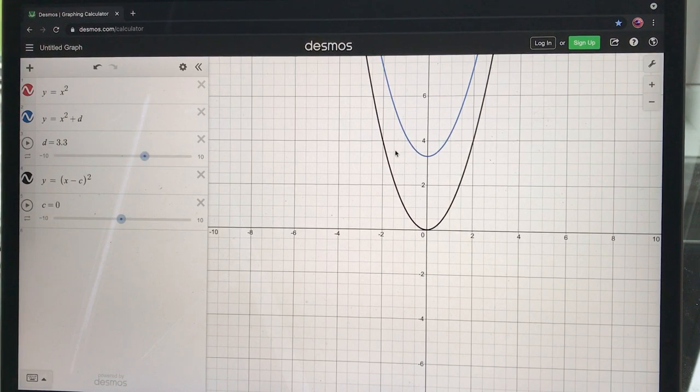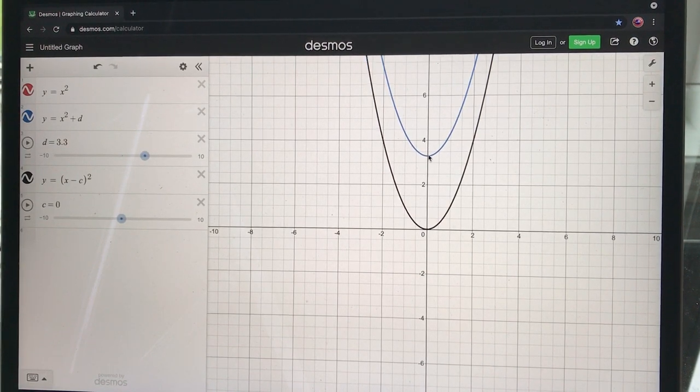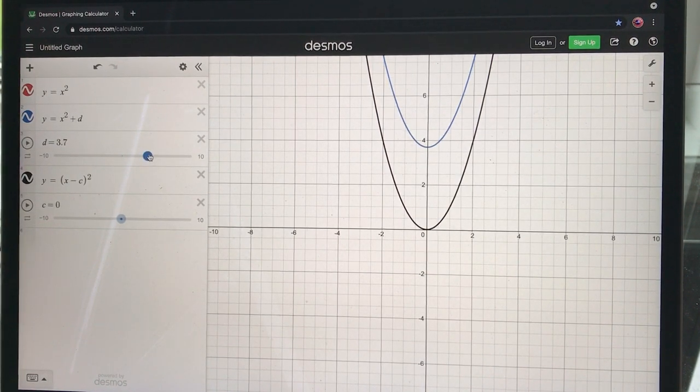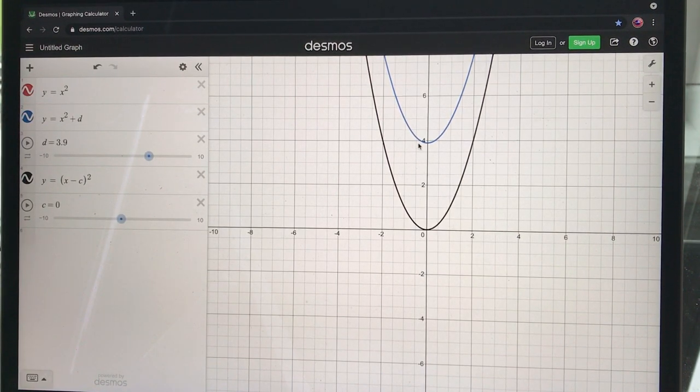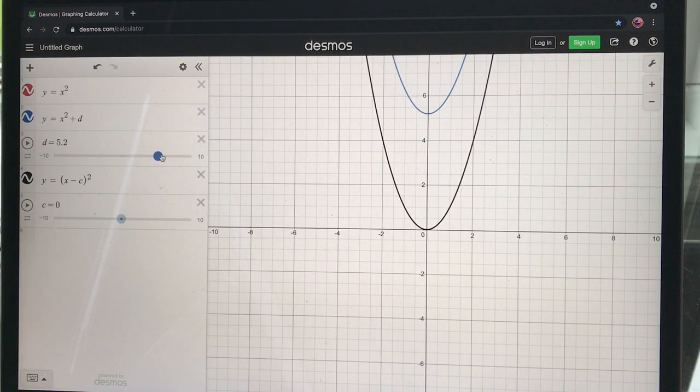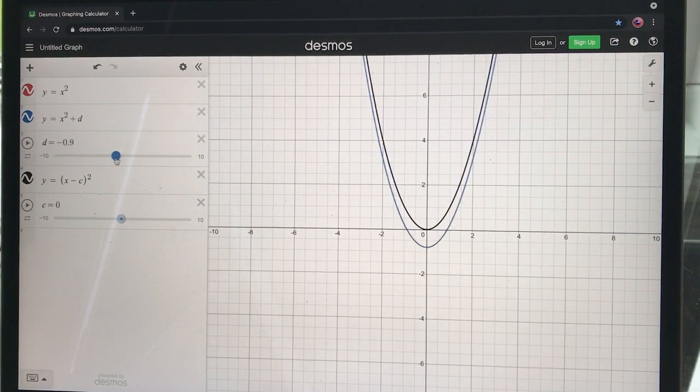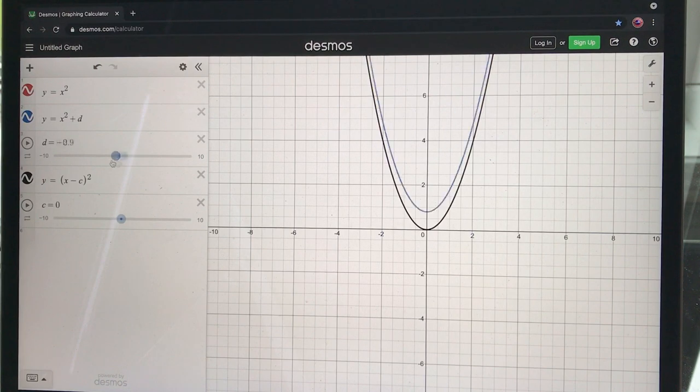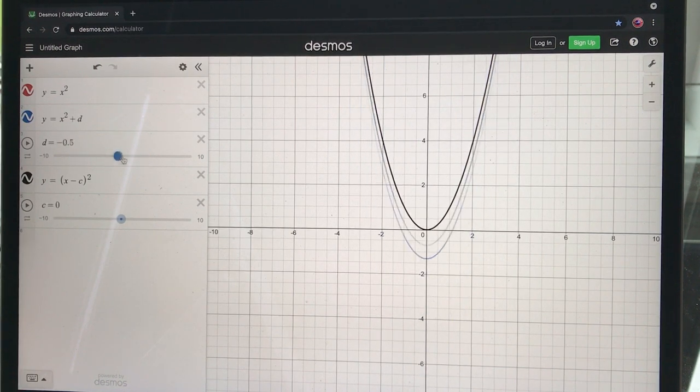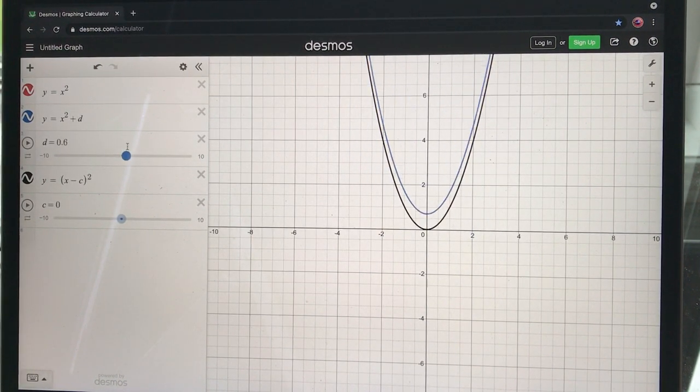So as d goes up and down the function goes up and down. So d is getting larger, 3.3, there's my y-intercept at 3.3. Say d hits four, so it's y equals x squared plus four, so there's my plus four where it's hitting. It could be here at five and so on. So as d gets larger it moves up the y-axis, d is negative it moves down the y-axis. That d on the outside just moves the function up and down.